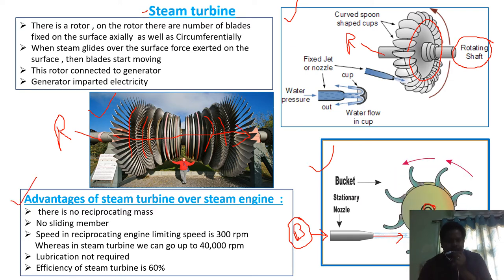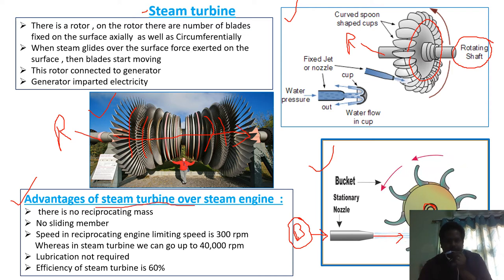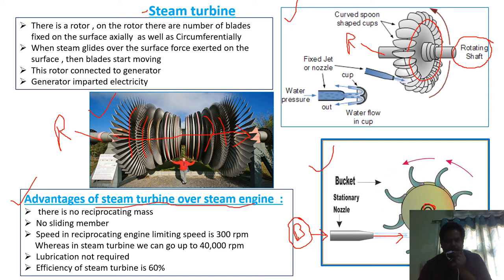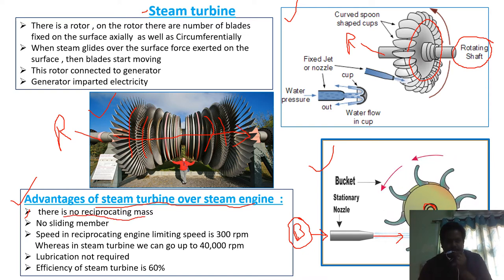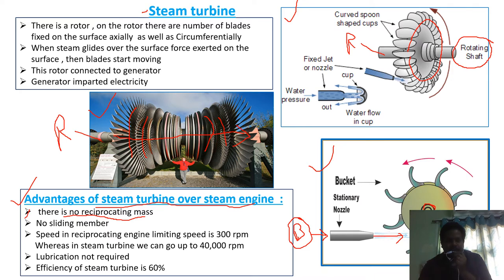Now let us see the advantages of steam turbine over steam engine. The first advantage is there is no reciprocating mass, because it is a dynamic motion. There is no reciprocating motion in the steam turbine, and no sliding members, because in the steam turbine there is no piston-cylinder arrangement.